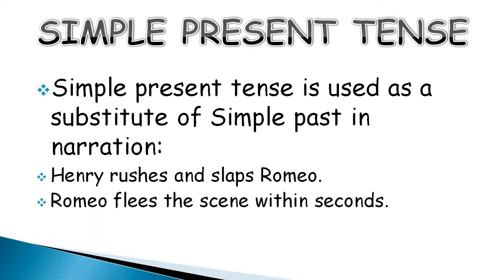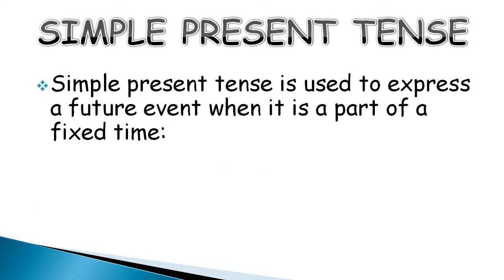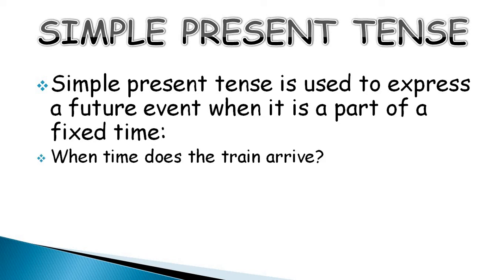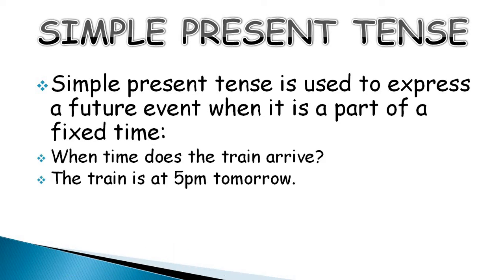Romeo flees the scene within seconds. Simple present tense is used to express a future event which is a part of a fixed time. What time does the train arrive? The train is at 5 p.m. tomorrow. These events are part of a fixed time and hence you use the simple present tense.